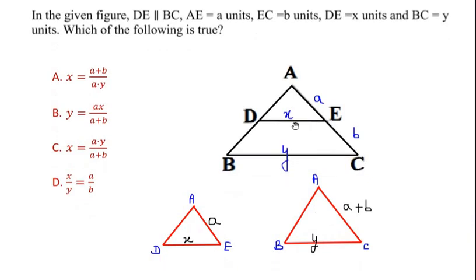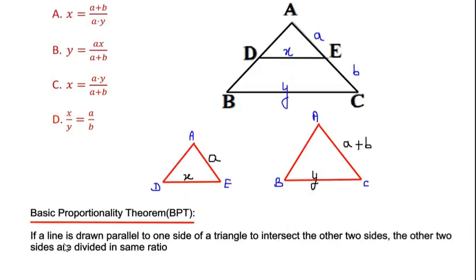Now, to solve this, we are going to make use of the basic proportionality theorem of the triangle, which is stated as: if a line is drawn parallel to one side of a triangle to intersect the other two sides, then the other two sides are divided in the same ratio. That means the corresponding sides are proportional.